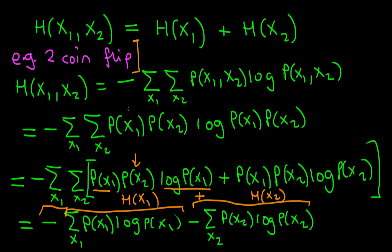In summary, we've seen two interpretations of entropy: one as a measure of uncertainty in a system, and the other as a measure of information content — how much information we convey to someone by telling them the outcome of a random process. Finally, we've seen that the additive property of entropy for independent outcomes provides intuitive justification for this particular mathematical form.